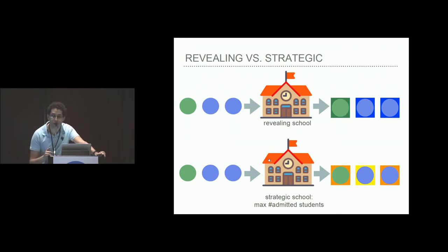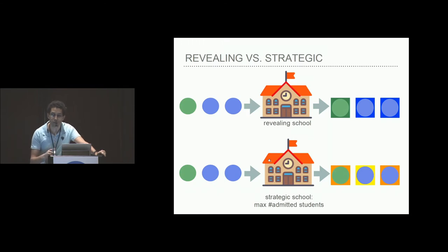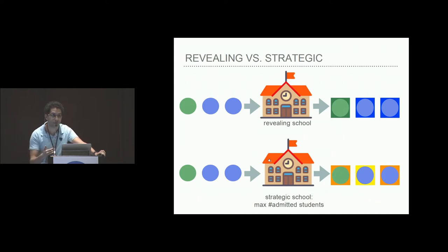To examine disparities in access to signaling, we look at two extreme cases. The first is a revealing school that truthfully reveals to the university all the information it has about its students — their transcript simply reveals the students' grades. The second is a strategic school that designs its signals or transcripts to maximize the number of students admitted to the university.